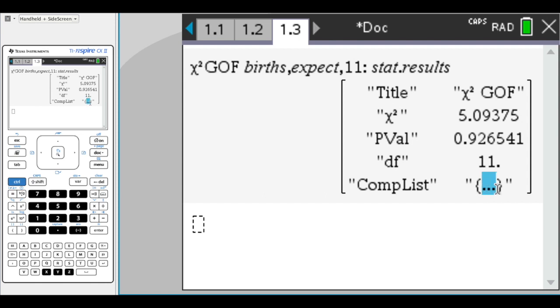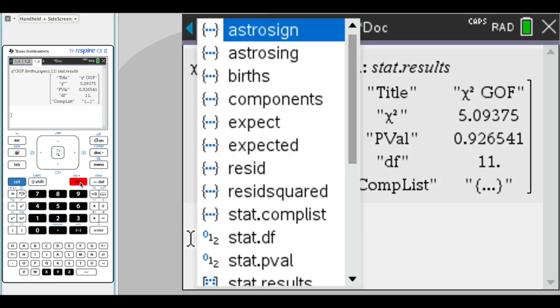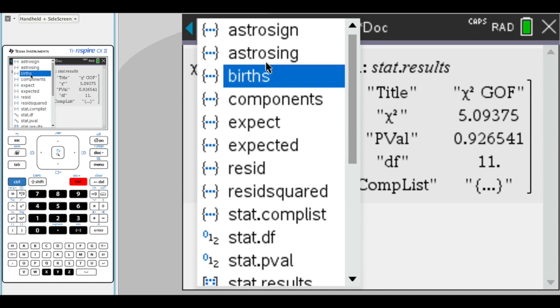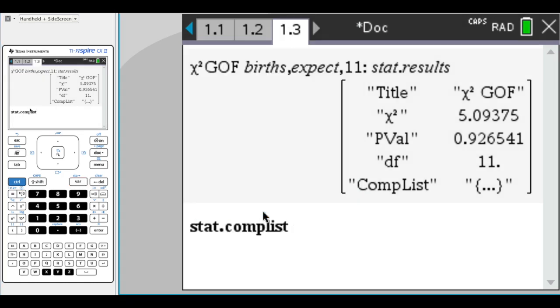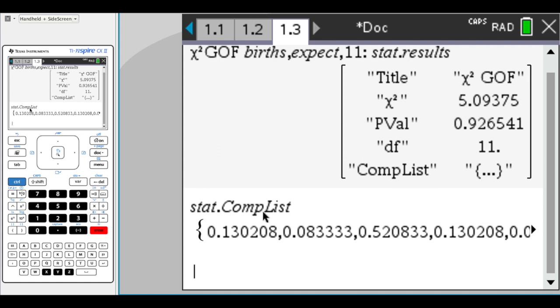But if you hit the VARS button, the Variables button, right above number 9, you can see this list of calculations. And what we want is the stat comp list. And if you hit enter, these are all of the individual chi-squared for the data values. We have our observed minus expected squared over expected, and these are all of our values that are contributing to our chi-squared test statistic.